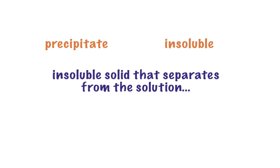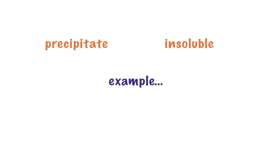An insoluble solid is one that separates from the solution. An example would be putting a rock in a cup of water — that rock is insoluble. It's not going to dissolve into the water. You can contrast that with salt: when you put salt in water, it will eventually dissolve. It is soluble. An insoluble compound is something that when you put it in water, it does not dissolve and remains in a very visible solid state, differentiated from the water.